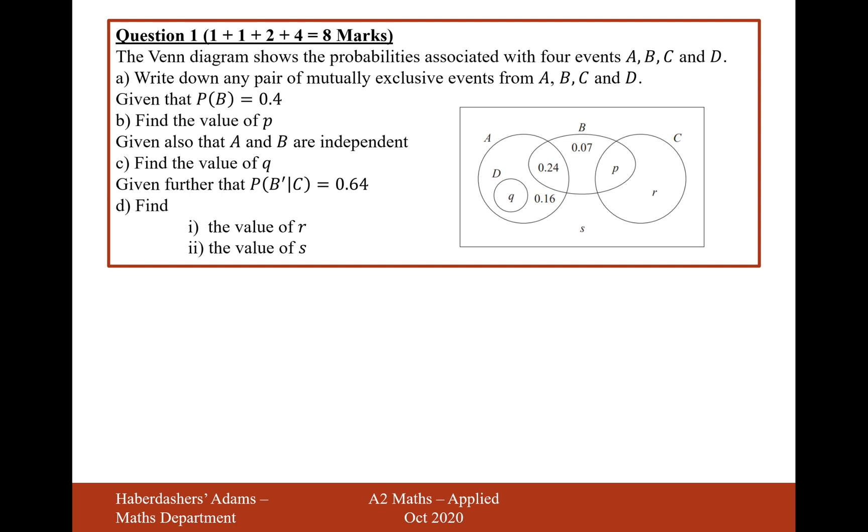The Venn diagram shows the probability associated with four events A, B, C, and D. Part A is write down any of the mutually exclusive events from A, B, C, or D. Now what mutually exclusive means is there's no overlap in the Venn diagrams.